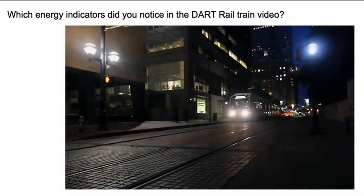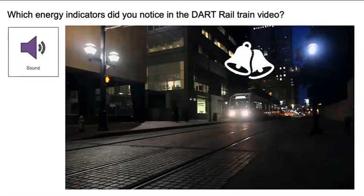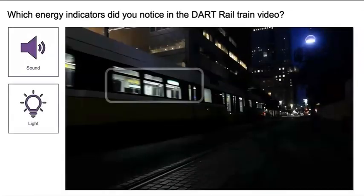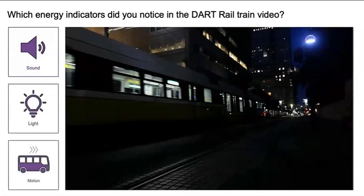Which energy indicators did you notice in the light rail train video? Maybe you heard bells as the train got closer, or you saw the flashing lights on the train and other lights inside the train cars. And of course, the train was moving. Light rail trains use a motor to turn their wheels and move. The motor is electric — it transforms electrical energy into mechanical energy. Mechanical energy is the energy an object has due to its motion or position.